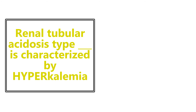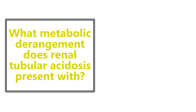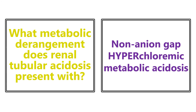Renal tubular acidosis type 4 is characterized by hyperkalemia. And to go along with that, renal tubular acidosis presents with a non-anion gap hyperchloremic metabolic acidosis — you need to know more than just 'it's an acidosis.'